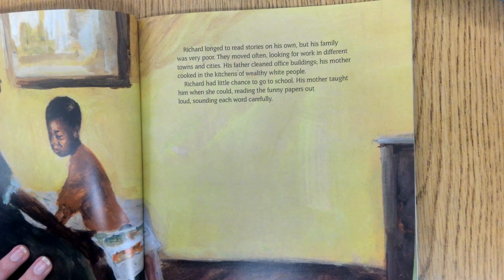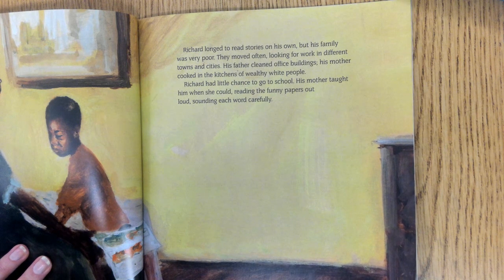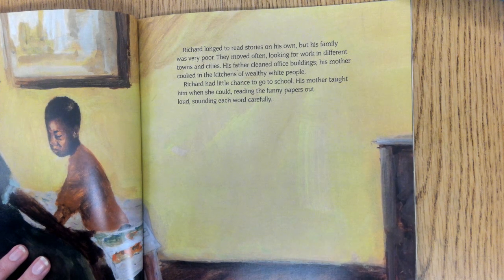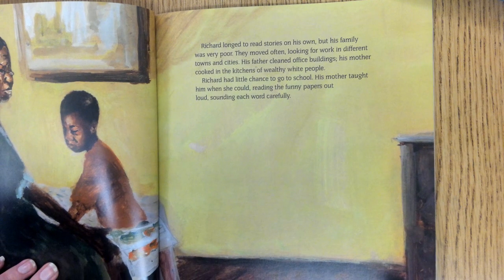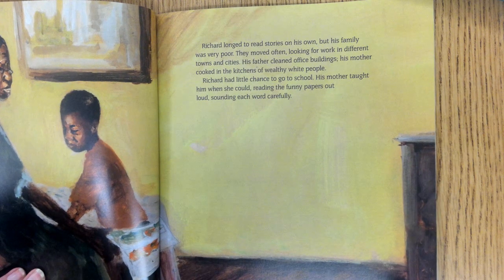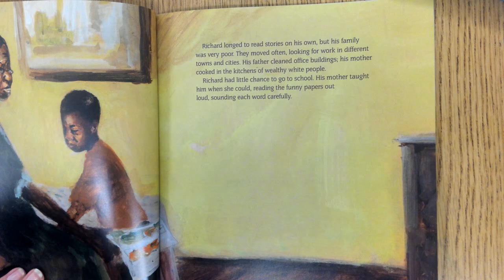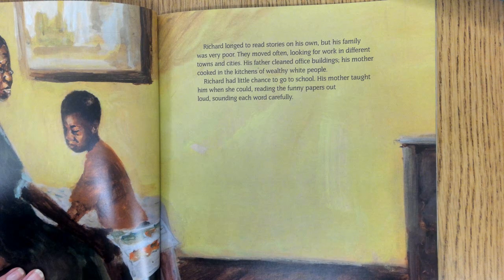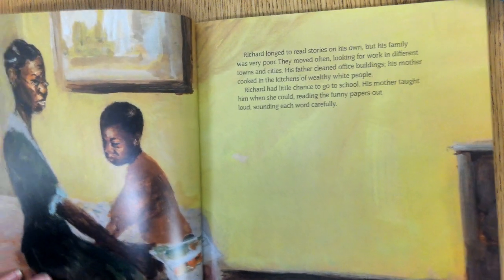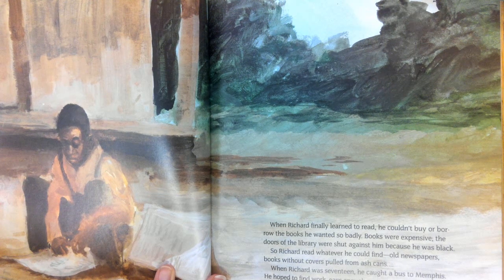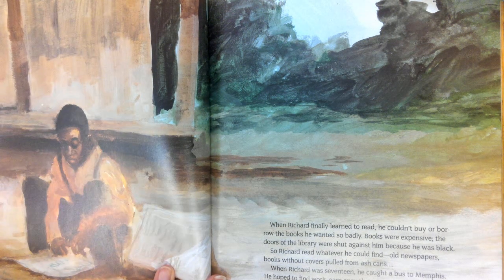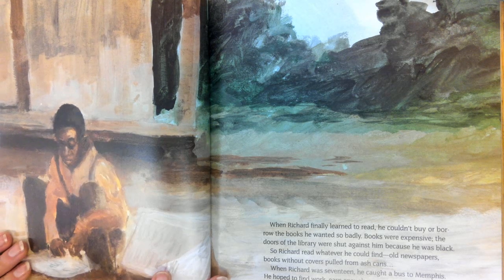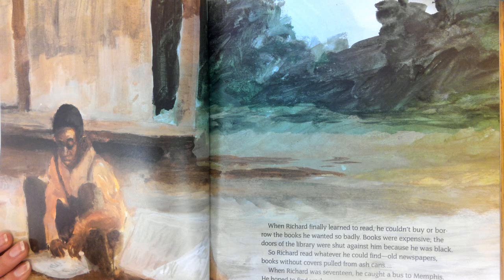Richard longed to read stories on his own, but his family was very poor. They moved often, looking for work in different towns and cities. His father cleaned office buildings. His mother cooked in the kitchens of wealthy white people. Richard had little chance to go to school; his mother taught him when she could, reading the funny papers out loud, sounding each word carefully. When Richard finally learned to read, he couldn't buy or borrow the books he wanted so badly. Books were expensive. The doors of the library were shut against him because he was black, so Richard read whatever he could find — old newspapers, books without covers pulled from ash cans.